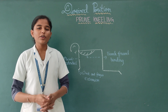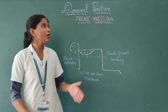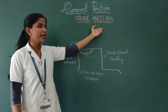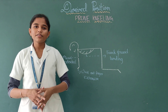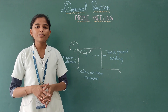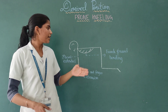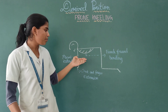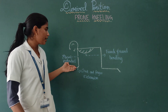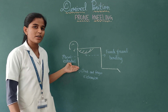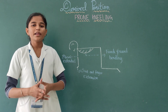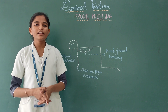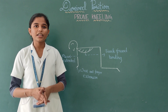Hi friends, in this video we are going to see about direct position in prone kneeling. It is otherwise known as quarter position or animal position. The trunk is bending forward and is stabilized by the upper leg by placing it on the floor. Remaining are same like the kneeling. For example, child crawling position.